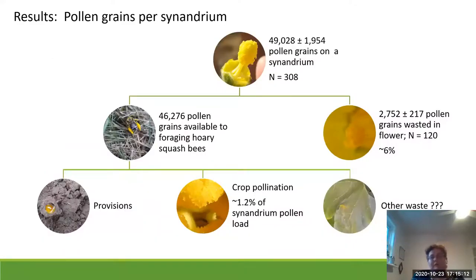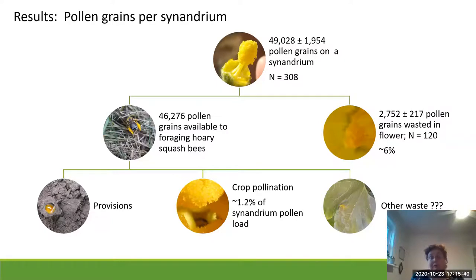So what were our results? We found that there were about 49,000 pollen grains on a synandrium, and about 6% of those pollen grains were lost to bee activity — falling off the synandrium into the base of the flower where they would not be used. That means about 46,000 pollen grains were available to bees to use to provision their nest cells.